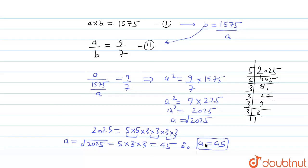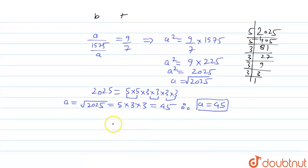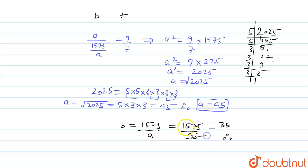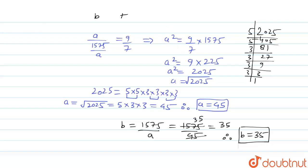Now to find the value of b: b equals 1575 divided by a, which is 1575 divided by 45. Upon simplification, b equals 35. So we have found the values of a and b, which are 45 and 35. I hope you understood the solution.